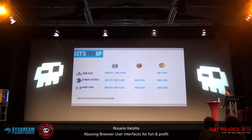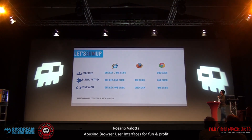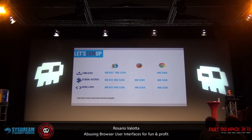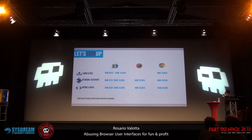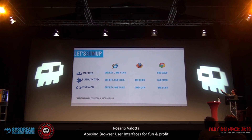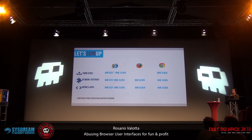To summarize: on Internet Explorer, we can get code execution with one key or one click, and in a man-in-the-middle situation, there is arbitrary code execution. On Google Chrome, we can get code execution with one click, install a plugin with one click, or bypass HTML5 API confirmation with one click.